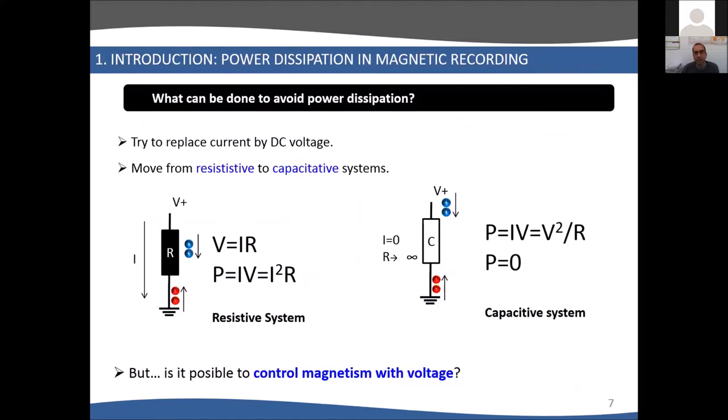What can we do in the laboratory to minimize this problem? Instead of controlling magnetization with magnetic fields, we can try to control magnetism with voltage. Imagine a capacitor where one of the plates is magnetic, so when we apply a voltage, we would like to switch the orientation of the magnetization without having to use current.